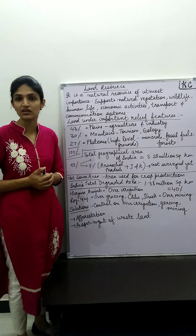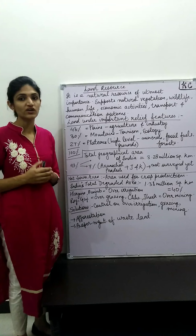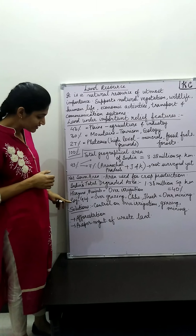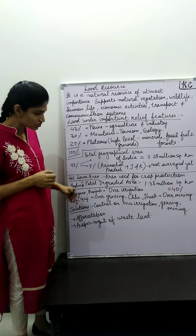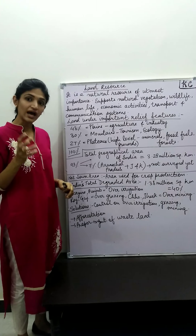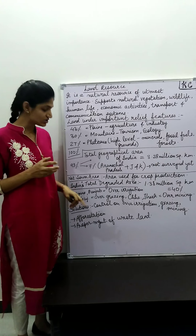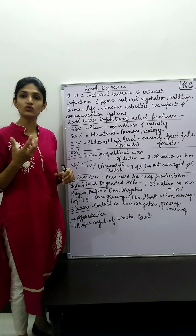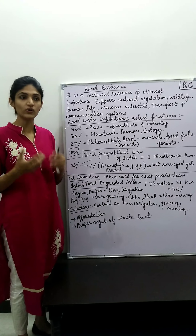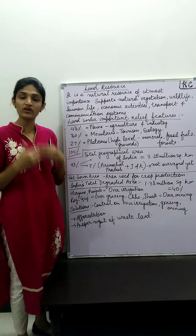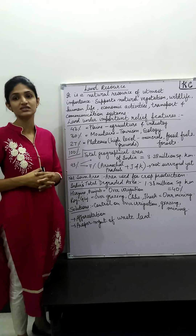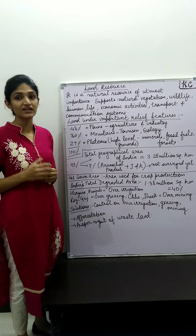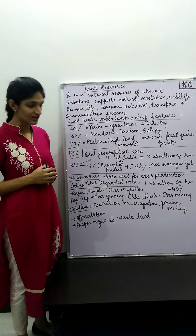Our next topic is land degradation. There are a lot of human activities that have degraded, spoiled, and exploited land. Food, clothing, and shelter are our basic requirements, and these three things we get from land.